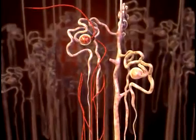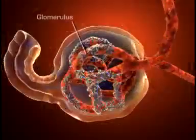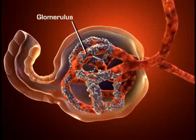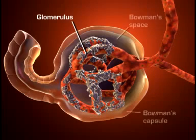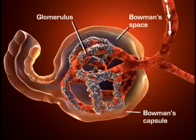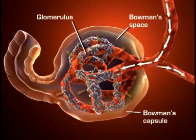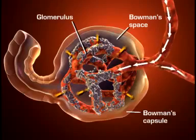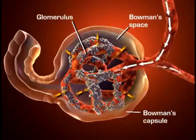Each nephron consists of a glomerulus and a system of tubules. The glomerulus is a unique high-pressure mass of capillaries that filters the blood. The glomerulus is encased in a thin, double-walled capsule called Bowman's capsule. The space inside the capsule and surrounding the glomerulus is called Bowman's space.